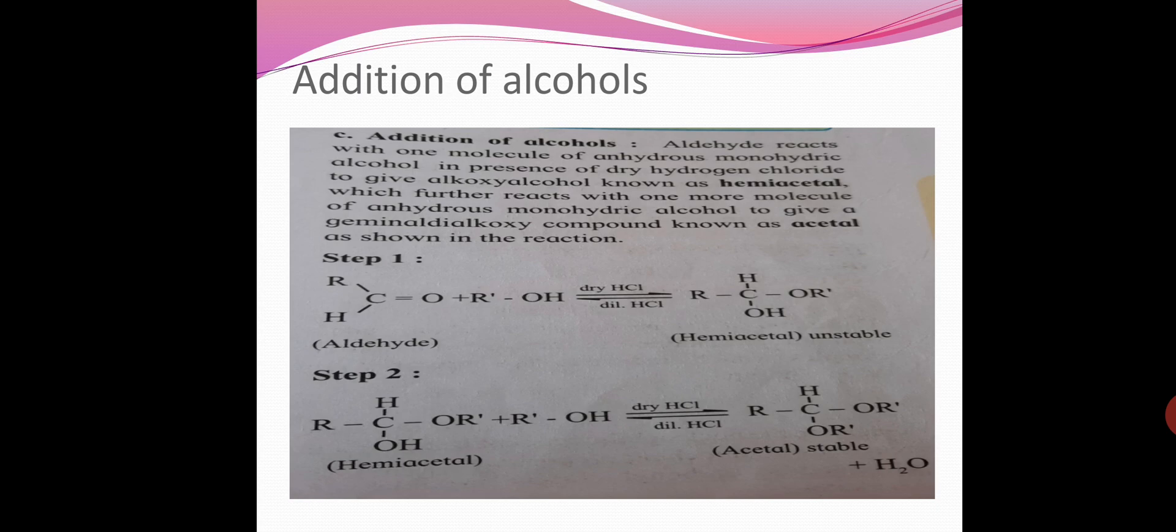Next reaction is addition of alcohols. Aldehydes react with one molecule of anhydrous monohydric alcohol in presence of dry hydrochloric acid to give alkoxy alcohol, which further reacts with one molecule of anhydrous monohydric alcohol to give geminal dialkoxy compound known as acetal. Aldehyde with one molecule of alcohol gives hemiacetal, an unstable product. In second stage, hemiacetal further reacts with alcohol to give acetal, which is a stable product.